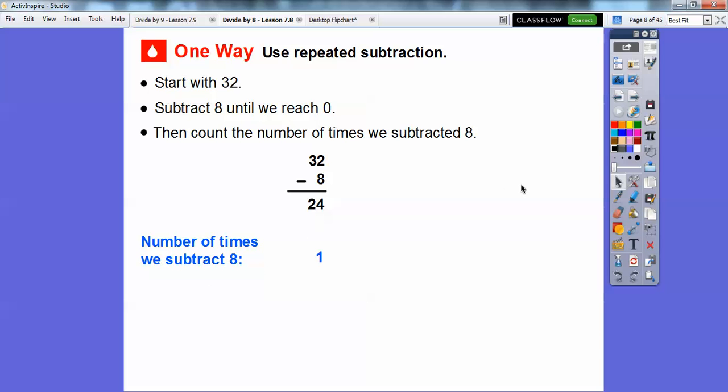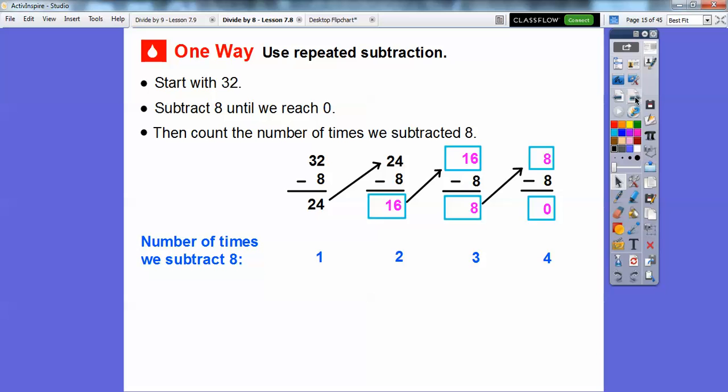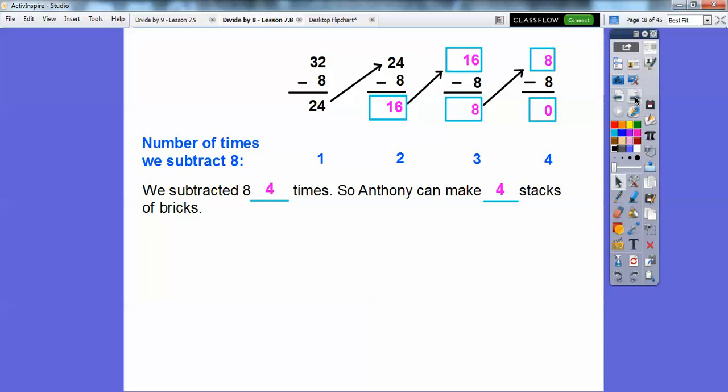So now we're going to take this 24 and subtract 8 again. So 24 minus 8, this is going to give us our second time we subtracted 8. 24 minus 8 is 16. Then we'll take that 16 and then subtract 8 again. So 16 minus 8 is 8. So this is the third time we subtracted 8. We subtracted it 1, 2, 3. So now we're going to take this next 8 right here and subtract 8 again. And finally, we're going to get 0 right here. So it took us 4 times to subtract 8. So we subtracted 8 four times so he can make 4 stacks of bricks. That's one way we can do 32 divided by 8.